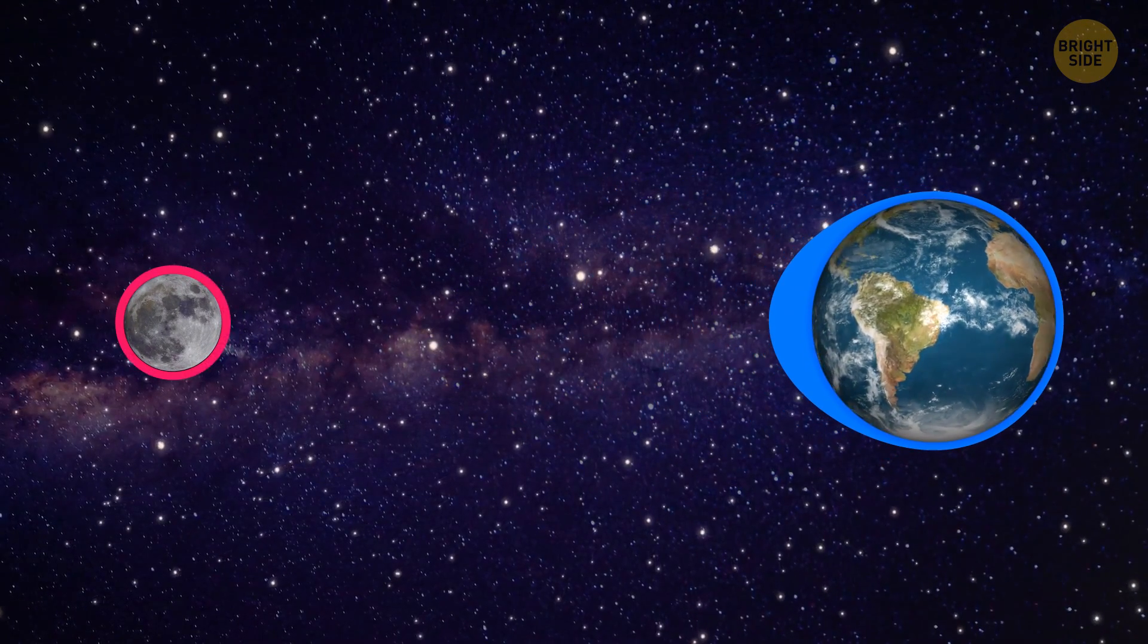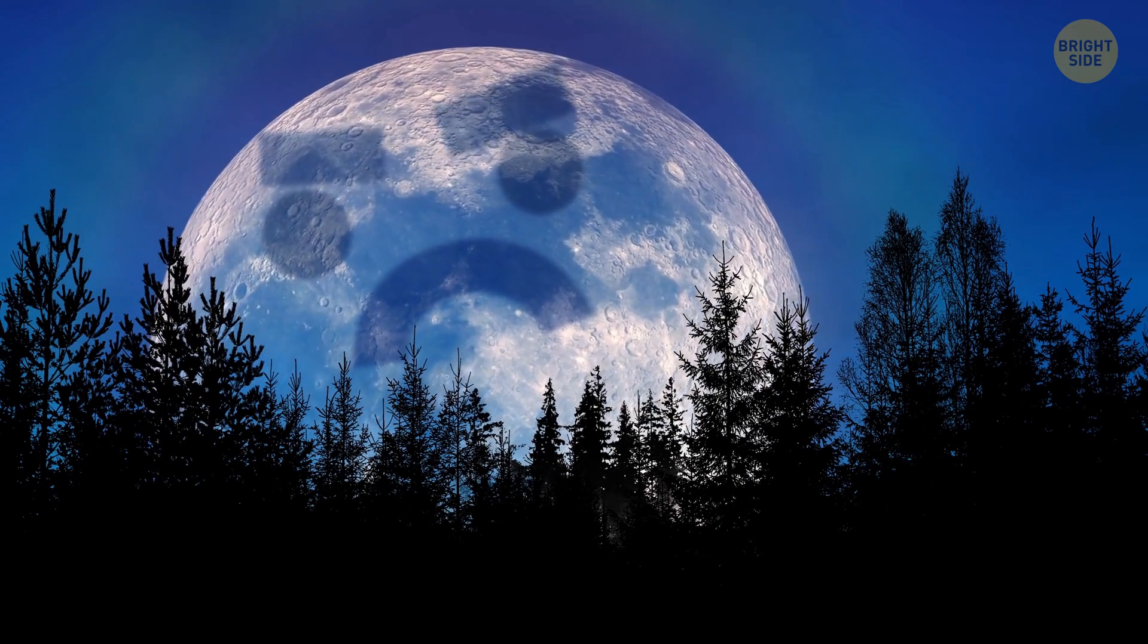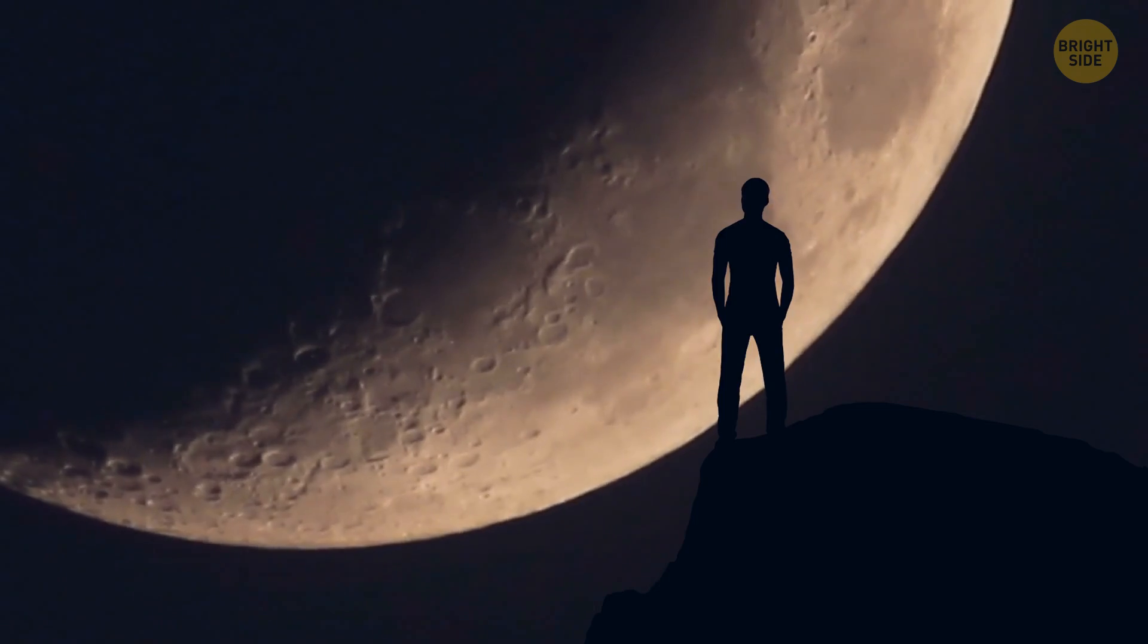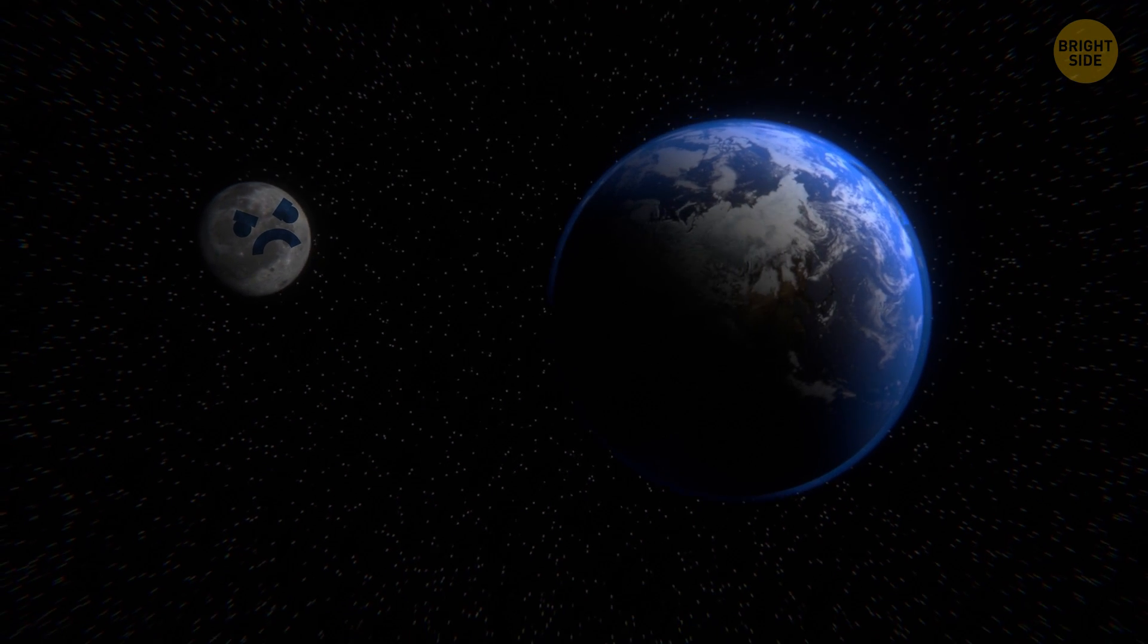The Earth also has an effect on the moon, which we'll get into in a minute, but it appears that the moon might not like our company as much as we might think. It's slowly drifting away from us, even as we speak.